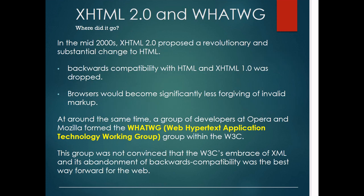XHTML 2.0 was popular before HTML5. There was a group called WHATWG — the Web Hypertext Application Technology Working Group — now within W3C. It was formed by developers from Opera and Mozilla. That group did a lot of work on XHTML 2.0, and based on that work the next version, HTML5, became available. They identified which tags to keep, how to modify others, and also addressed browser compatibility issues.